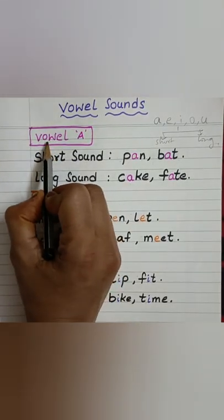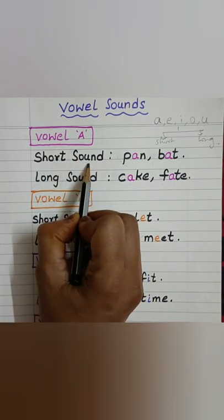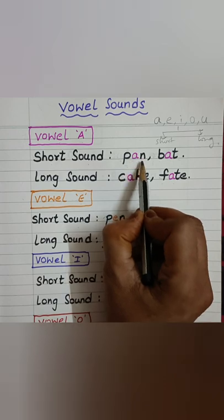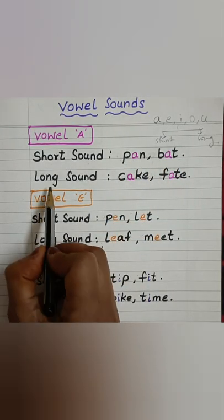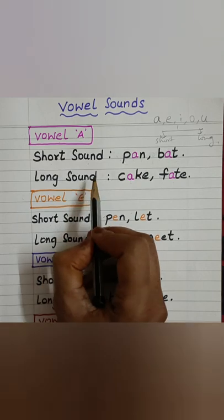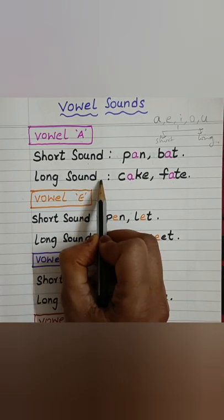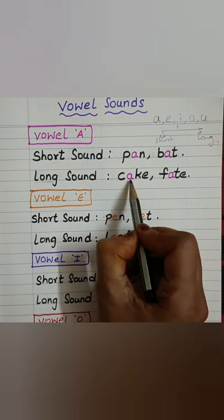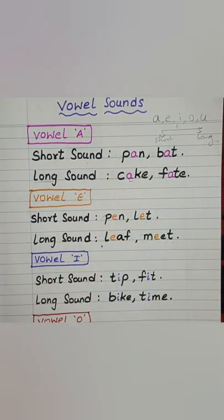First let us see vowel A. The short sound of A is 'a' — P, A, N: Pan. B, A, T: Bat. The long sound of vowel A is 'A' — we read the letter name, not the letter sound. K, A, K: Cake. F, A, T: Fate.